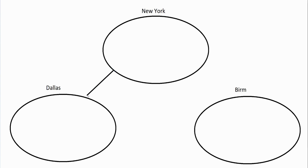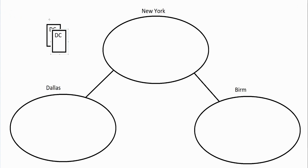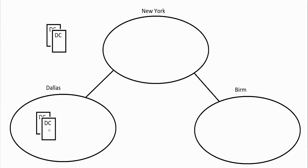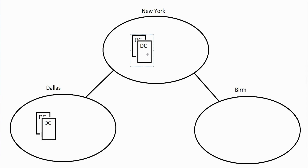You've got wide area network connections connecting these offices together, and domain controllers in each location. In New York, maybe a couple of domain controllers, and a couple of domain controllers in Dallas as well.